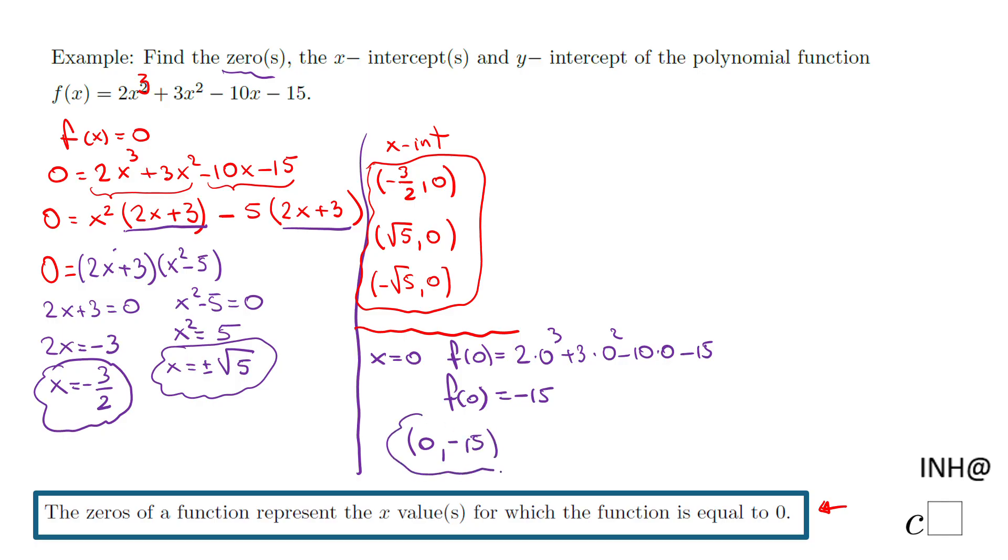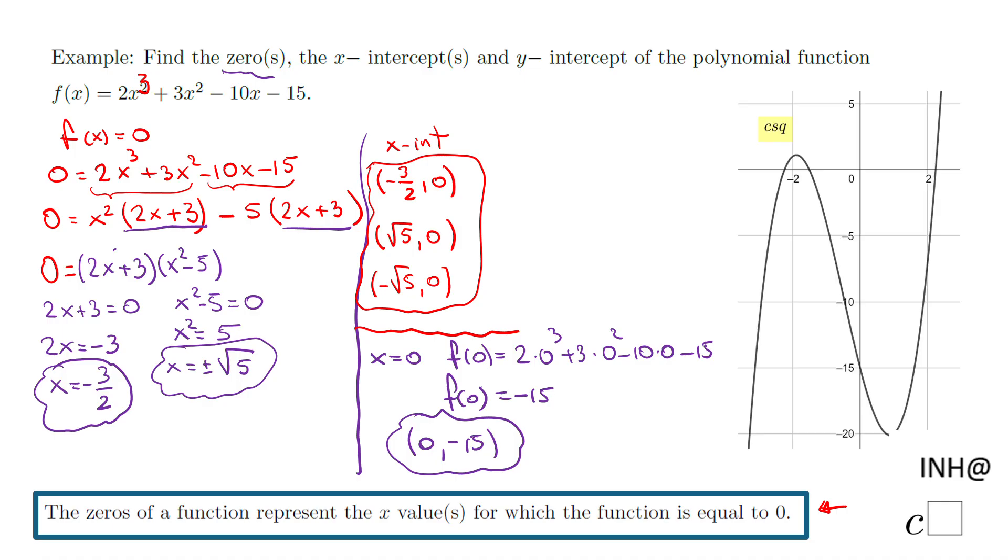One more thing on this example, I'll show you the graph if you have a computer that can graph for you or if you have a graphing calculator. There you go, look at here. These are the zeros or the x-intercepts.